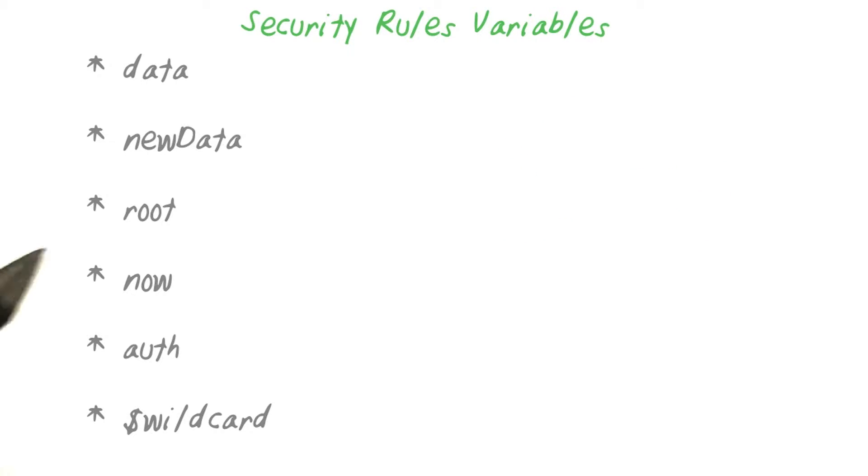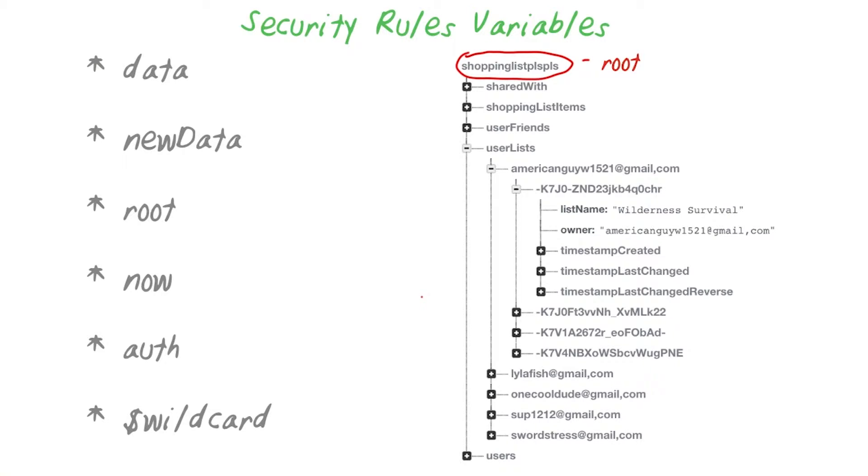In addition, you have access to root, now, and auth. Root is a variable that represents a rules data snapshot, much like data or newData, but it's of the root node for your data.